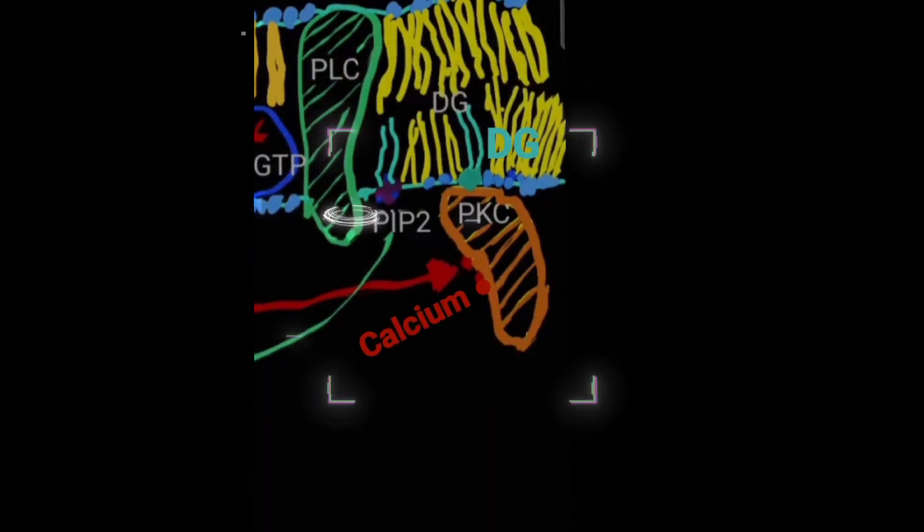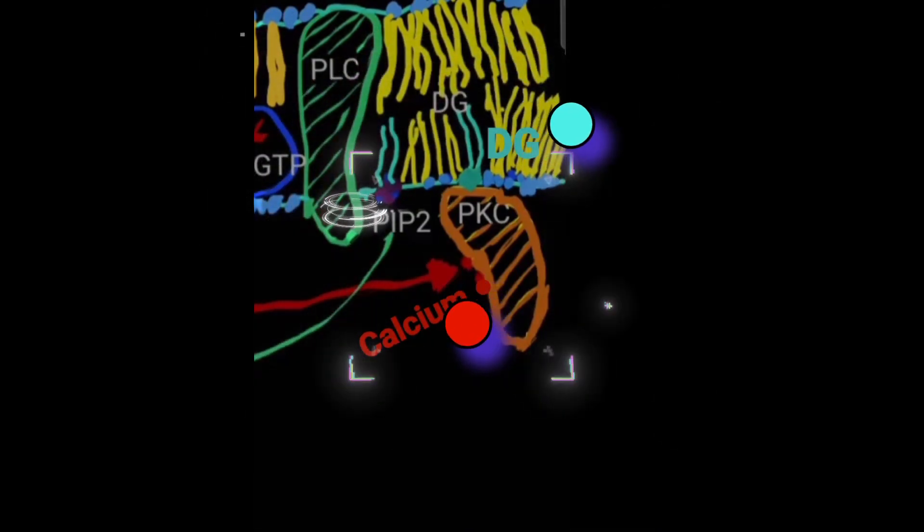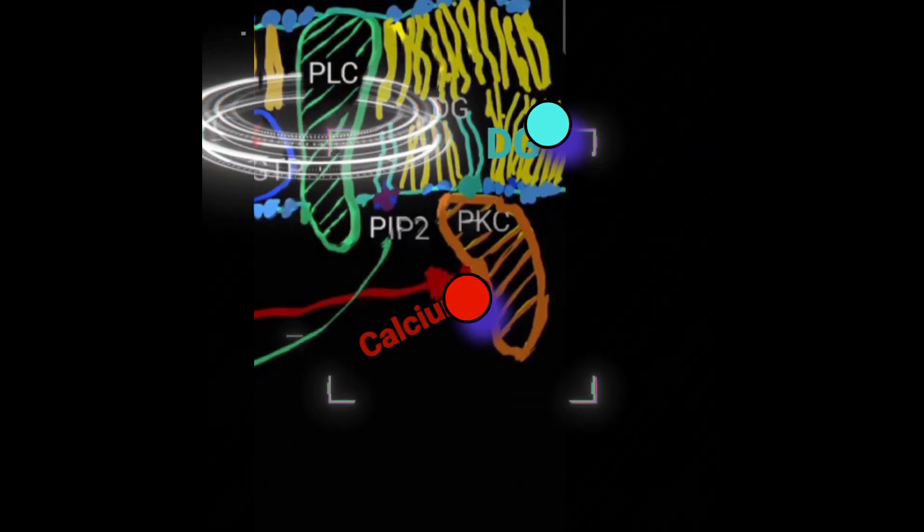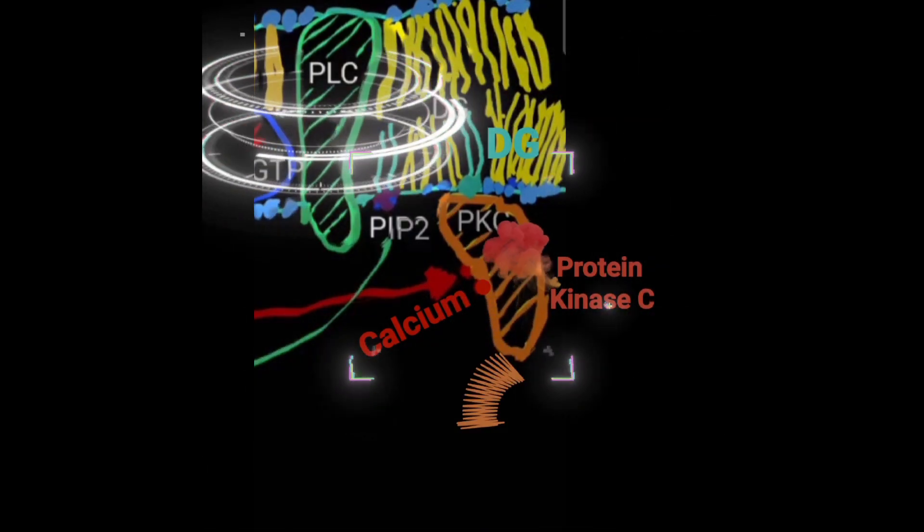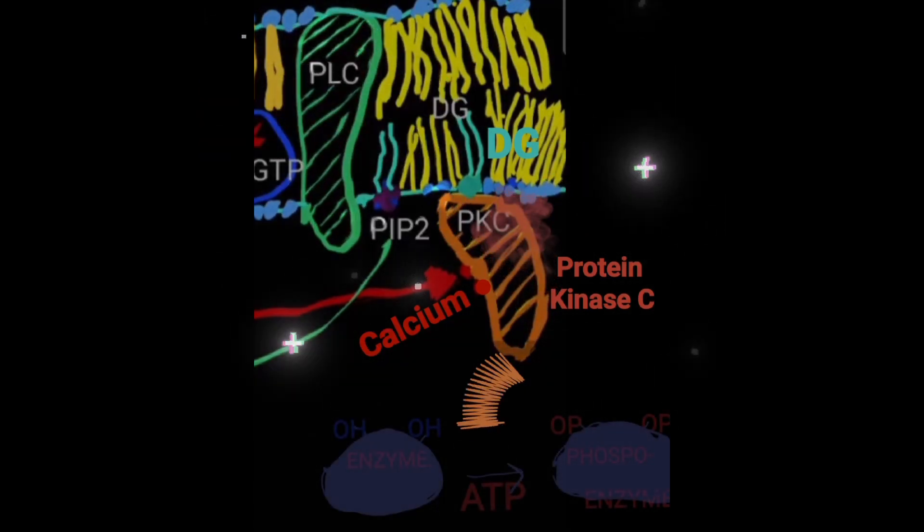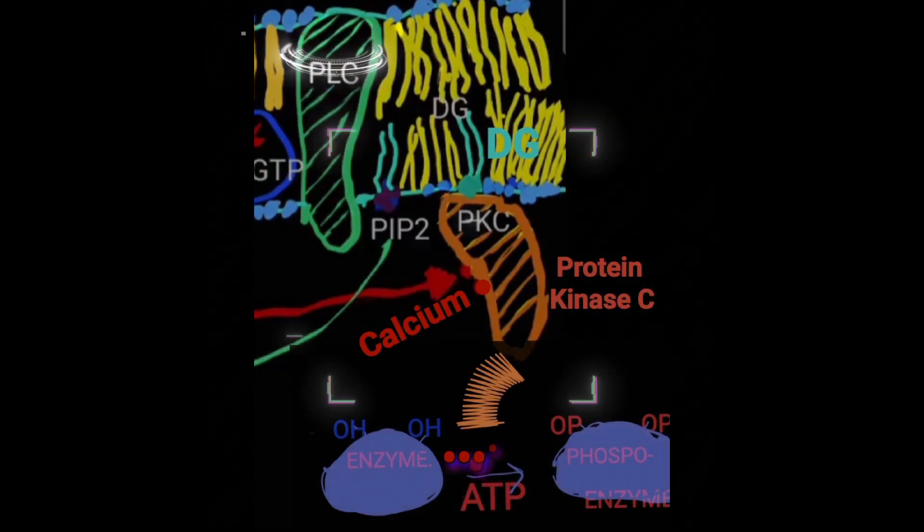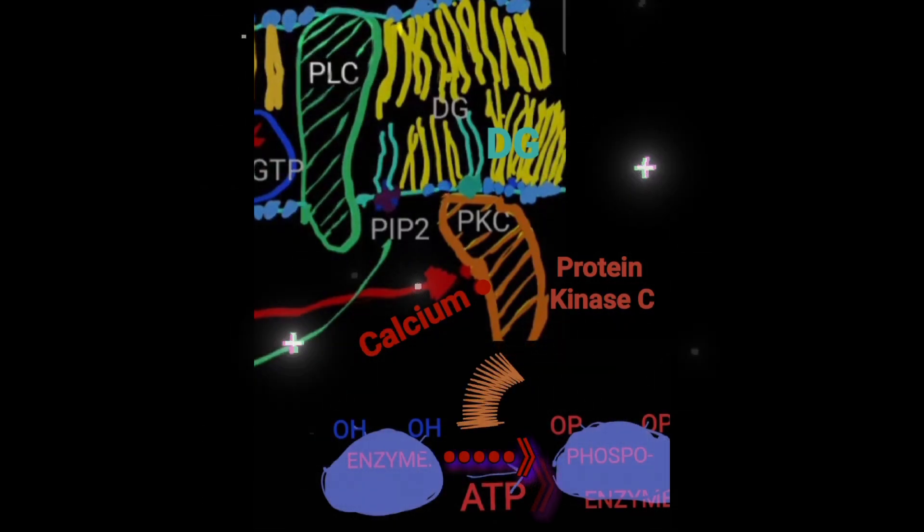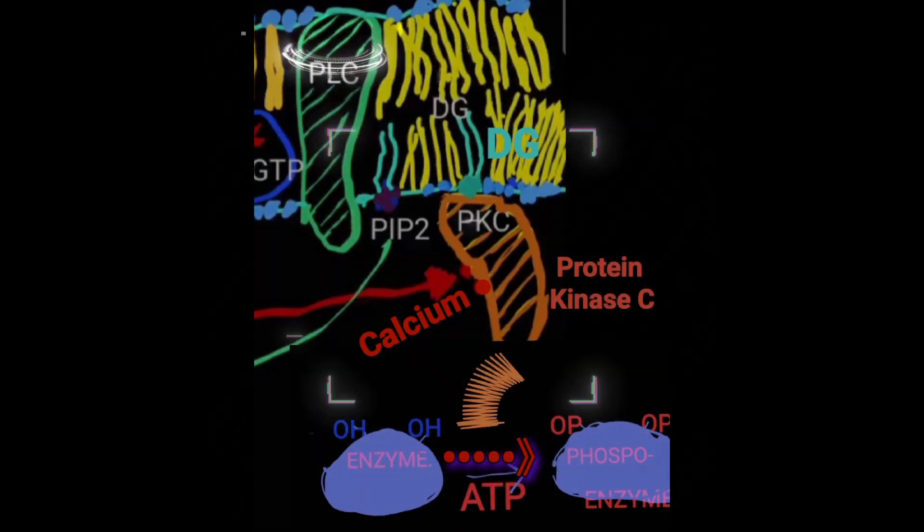Two of the second messengers, diacylglycerol and calcium, will bind to protein kinase C (PKC) and synergistically activate this enzyme. This protein kinase will then phosphorylate specific target proteins and change their activity, resulting in a specific cellular response.